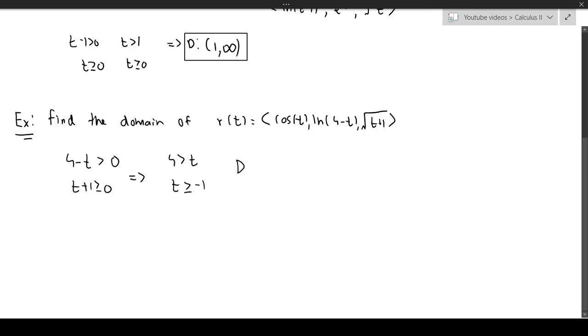And then the second one implies that t must be bigger than or equal to minus 1. But then this implies that the domain is going to be from minus 1 to 4. And that right there is going to be our domain here.